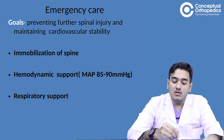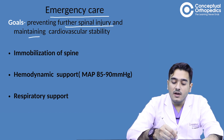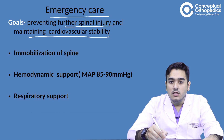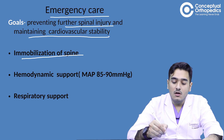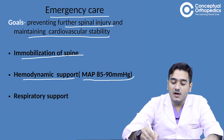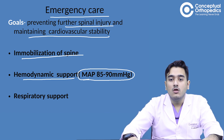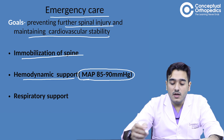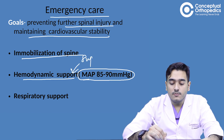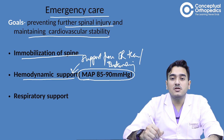When we have a patient in the emergency, one of the major goals is to prevent any further injury to the spine and to maintain cardiovascular stability. We must immobilize the spine and maintain hemodynamic support — the mean arterial pressure should be between 85 to 90 mmHg. It is important to involve the ER team or the intensivist team to ensure this MAP is maintained.